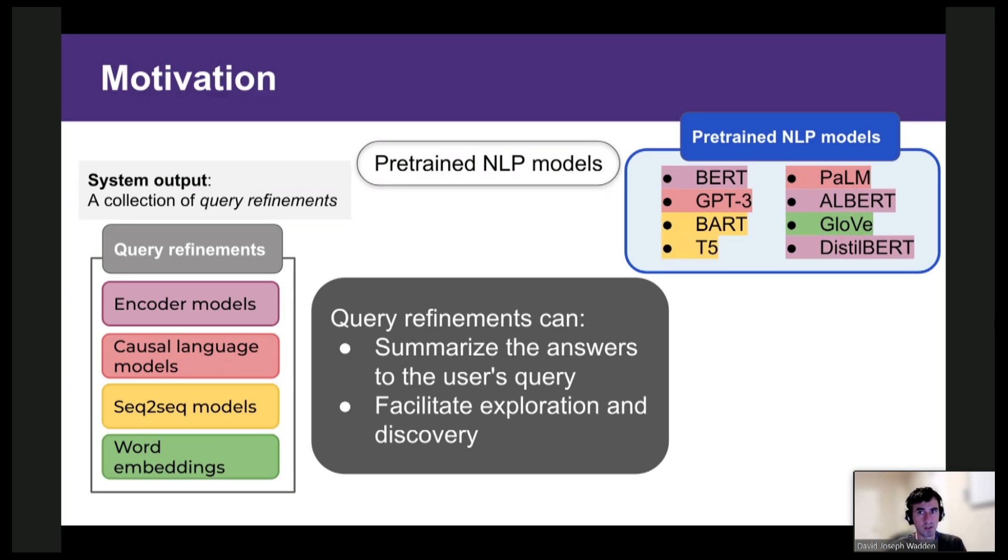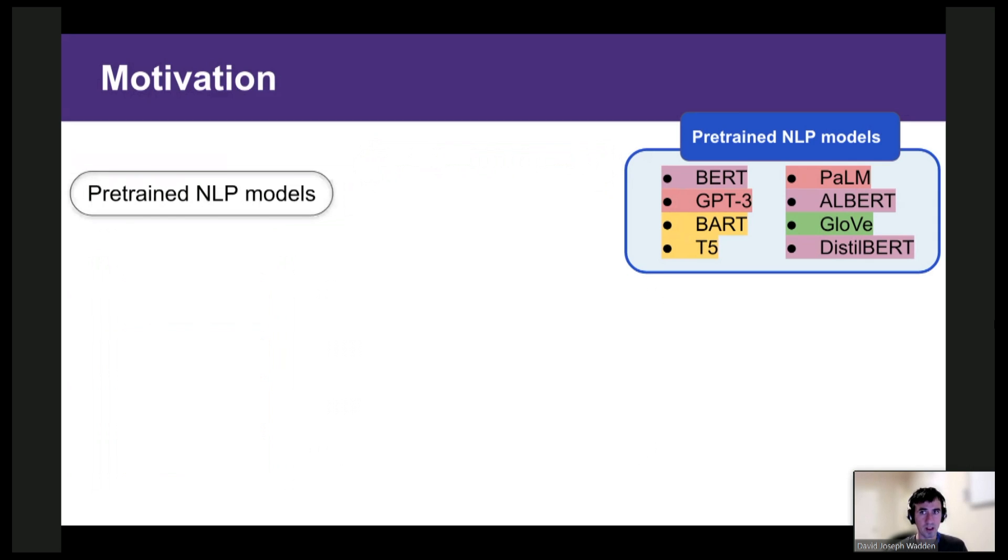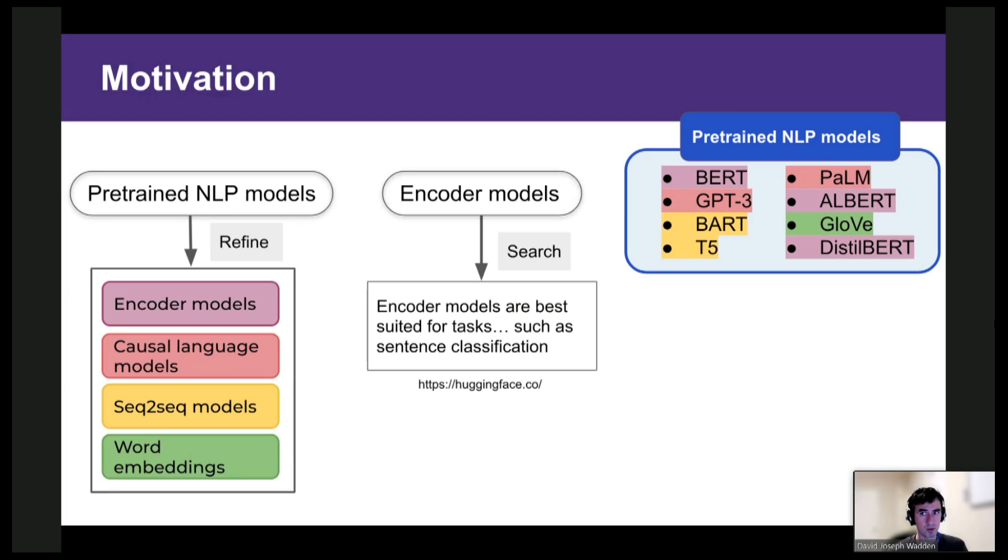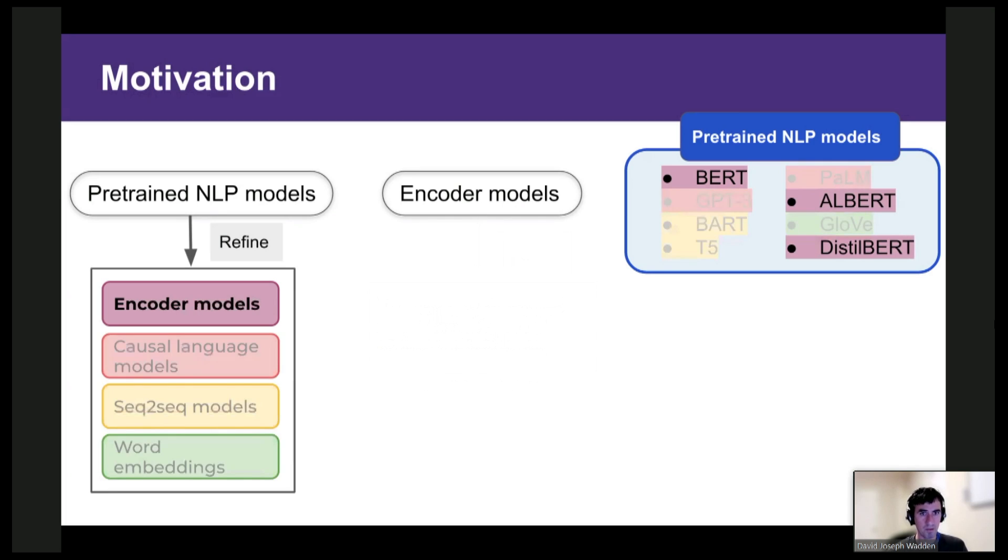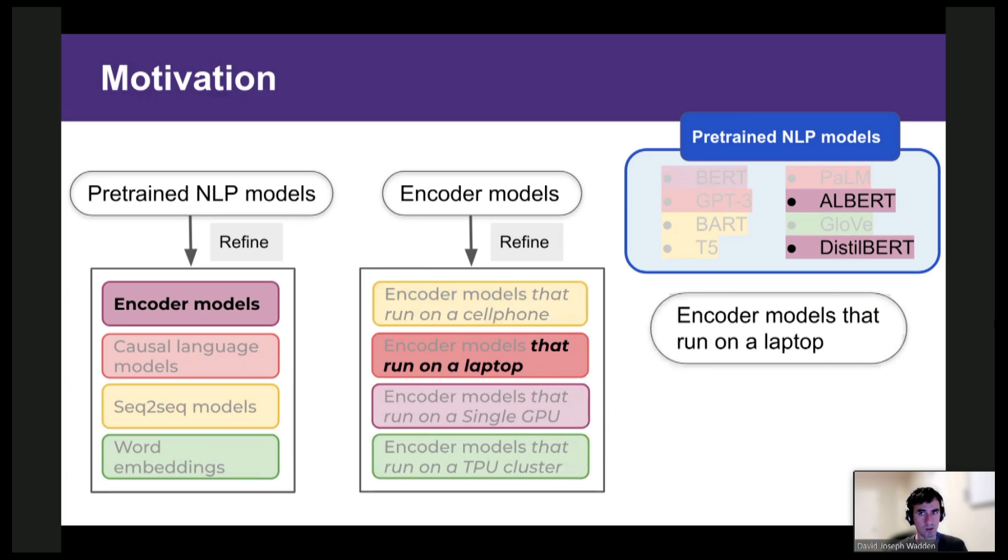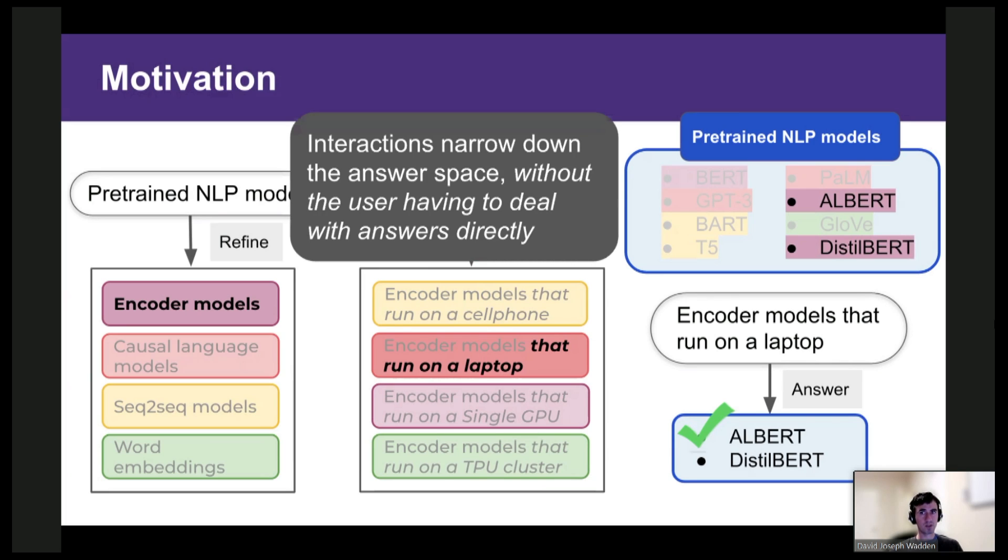And in addition, query refinements can facilitate exploration and discovery of relevant entities. And I'll illustrate this with a hypothetical user interaction. So to begin, the user enters a search for pre-trained NLP models and the system returns a list of refinements. And then the user performs a follow-up search for encoder models. The search returns a web page indicating that encoders are good for sentence classification. And so now the user could ask for refinements to encoder models specifically. And the system could categorize the encoder models by their size, models that run on a cell phone, a laptop, etc.